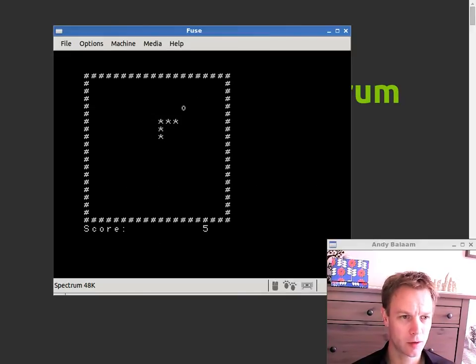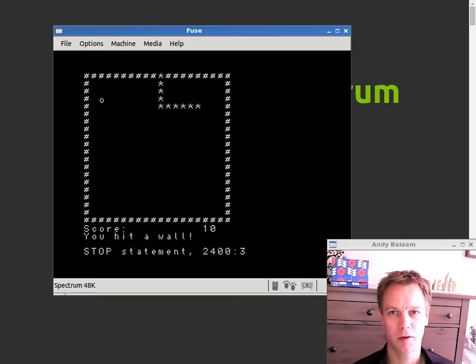So let's just prove it to you first by actually running my program and showing you that it works. So there's the snake. You move it around by pressing OPQA which is the classic Spectrum controls and when you hit a wall you die. So that proves it.